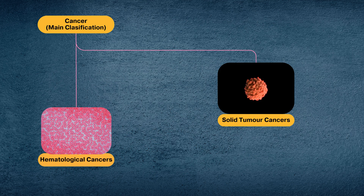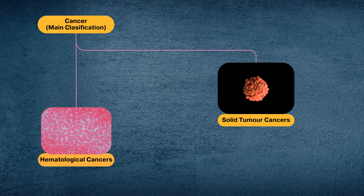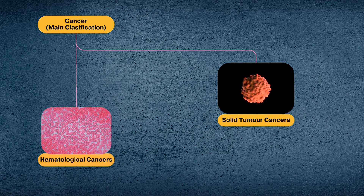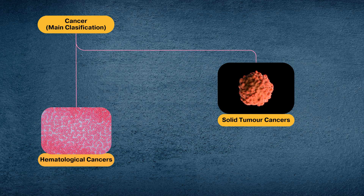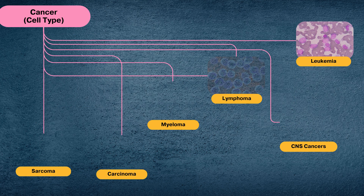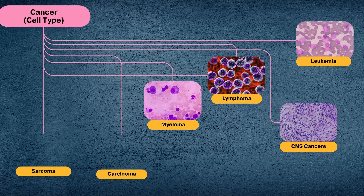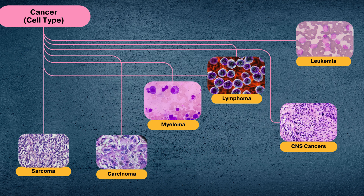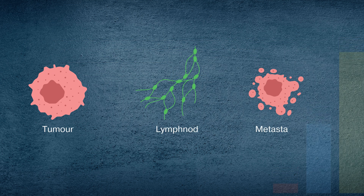Hematological cancers involve blood cells, while solid tumours originate in organs or tissues. Cancers are categorised based on their origin, like breast or lung cancer, as well as by cell type, including carcinoma, sarcoma, leukemia, lymphoma, myeloma, and central nervous system cancers.